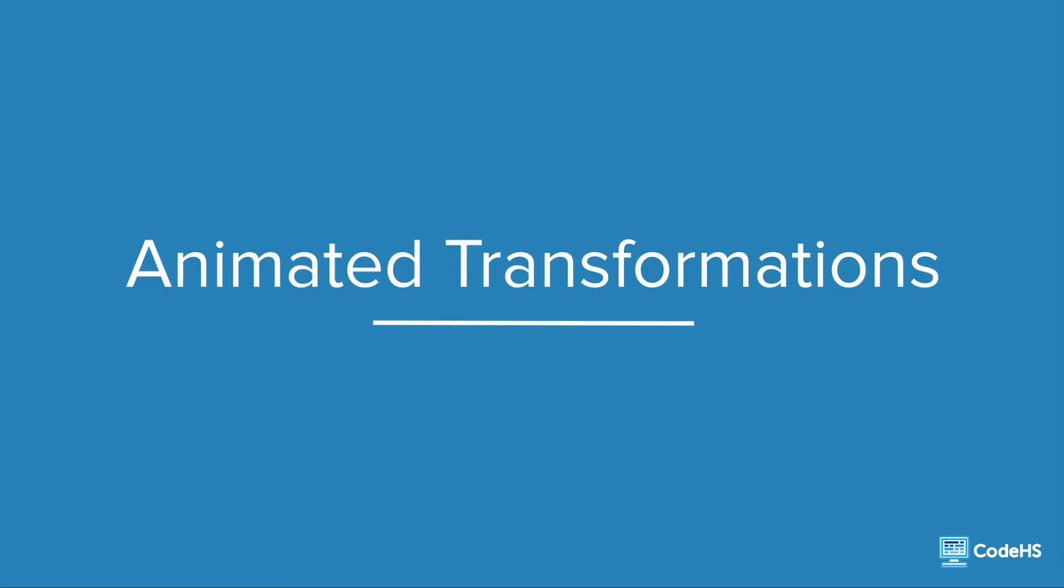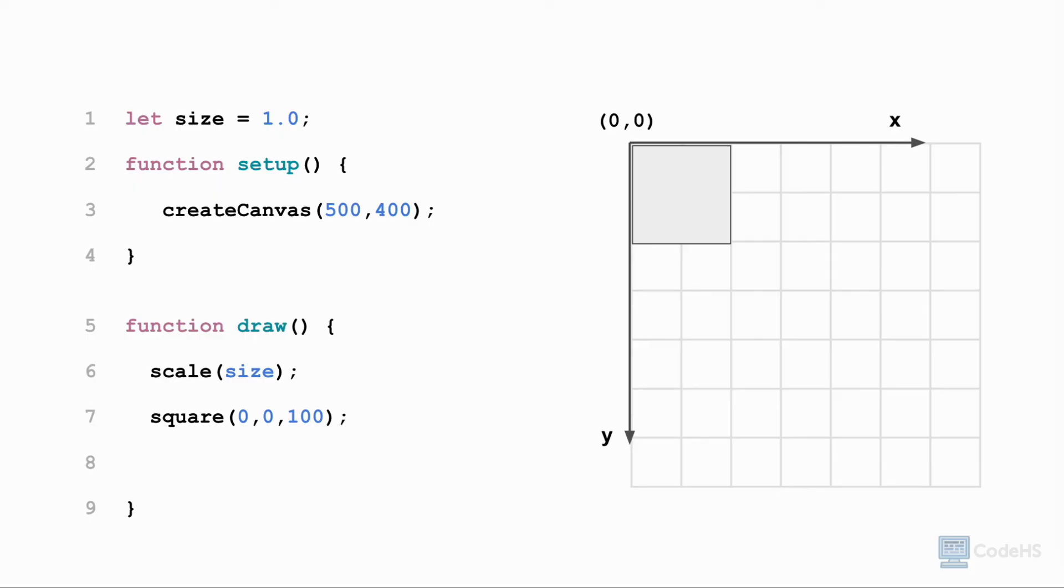Shape transformations create very interesting animations. Let's try one. Using variables, we can animate the transformation of a shape. For example, to animate the scale of a shape, we can initialize a variable called size to 1.0. On each iteration of the draw loop, we can increment the size variable by 1.0 to increase the scale by an additional 100%. On each loop, it grows by another 100%, again, and again, and so on.